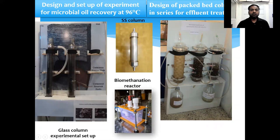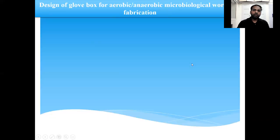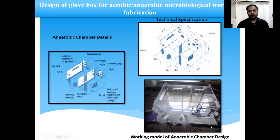Then we also designed the setup for microbial oil recovery experiments at very high temperature of 96 degrees centigrade. Then we also designed the biomethanization reactor which has the capacity to handle different types of agriculture residue. We have also designed a packed bed column for effluent treatment, which is a three-stage column. Then we have designed the anaerobic glove box for aerobic and anaerobic microbiological work. This is the design details and the actual working model of this chamber.